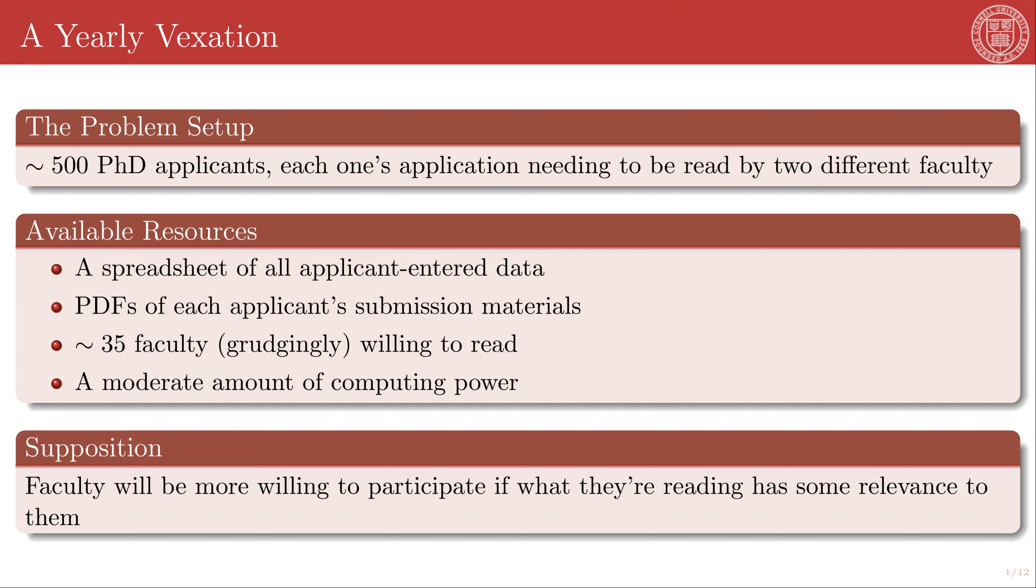In particular, we get something like 500 PhD applications, and we would very much like to read each of these. And for reasons that are probably self-explanatory, you would want more than one person reading each application. So at a bare minimum, you want 1000 reads of these 500 applications. And so you somehow have to allot these reading assignments between however many faculty you can scrape up that are actually willing to do this for you.